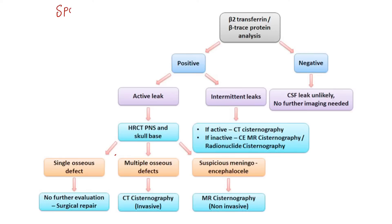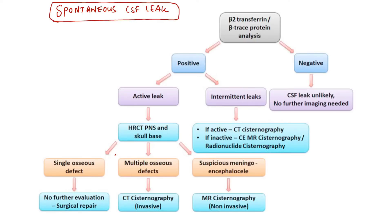If the non-traumatic CSF rhinorrhea is of etiologies other than spontaneous onset — such as congenital, neoplastic, or inflammatory — neurosurgical consultation should be done and surgical repair should be performed as the first choice. For spontaneous CSF leak, the patient should first undergo beta-2-transferrin and beta-trace protein analysis of the nasal secretion to confirm it is CSF.